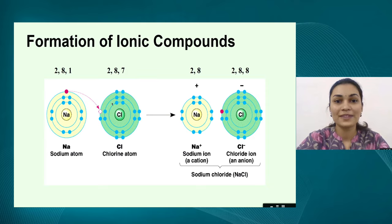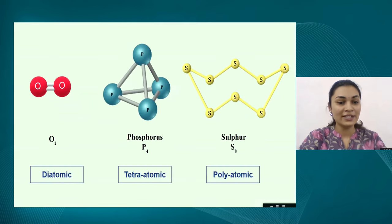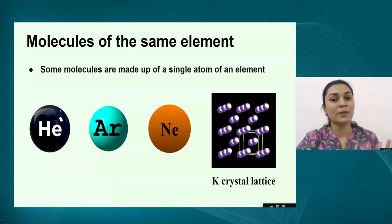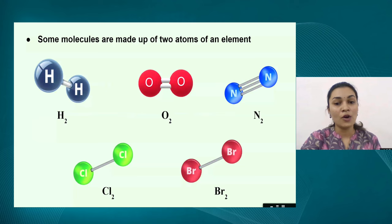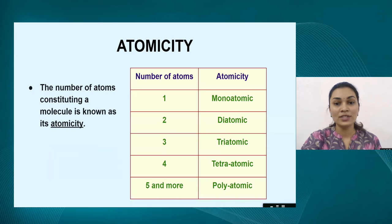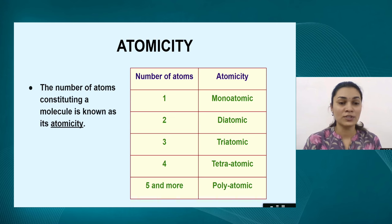We have one minute left, so let us revise what we have learnt today. We learnt about the types of molecules — types of molecules made from atoms, whether they are of the same element or different elements. Based on the number of atoms, we learnt about the term atomicity and how to name the atomicity of different molecules. To conclude, here is a table to help you remember the terms: for one atom — mono; for two — di; for three — tri; for four — tetra; and for five or more — polyatomic. I hope with all these examples, atomicity and how to classify each molecule is very clear.